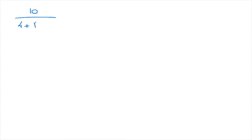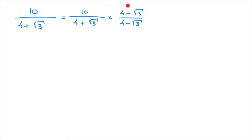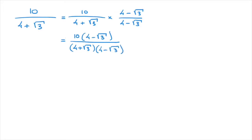Let's look at another example. Say we're given 10 over 4 plus the square root of 3. We can see that we have a radical expression on the denominator — that's the square root of 3 — so we need to rationalize this. Using exactly the same technique, we can state that this equals 10 over 4 plus the square root of 3, times 4 minus the square root of 3 over 4 minus the square root of 3. All we've done is copy the denominator from the initial expression, replacing the plus by a minus on both the numerator and the denominator. This leads to 10 times (4 minus the square root of 3) over (4 plus the square root of 3) times (4 minus the square root of 3).